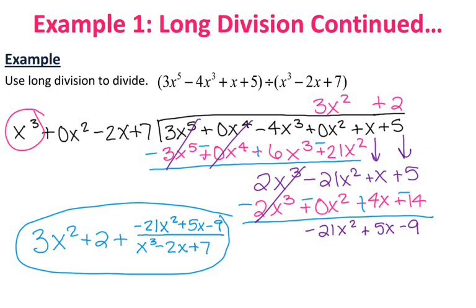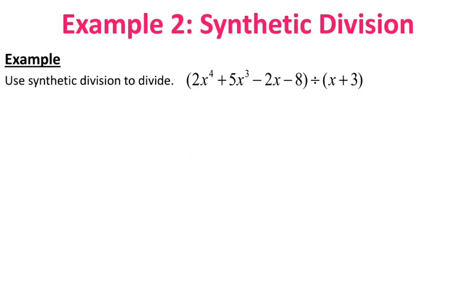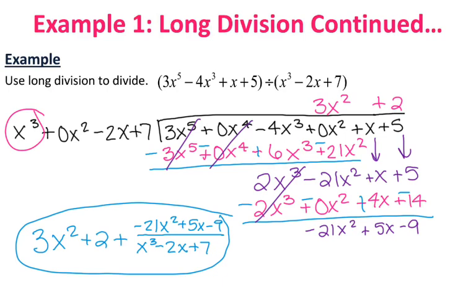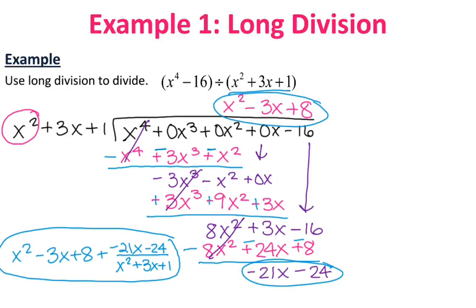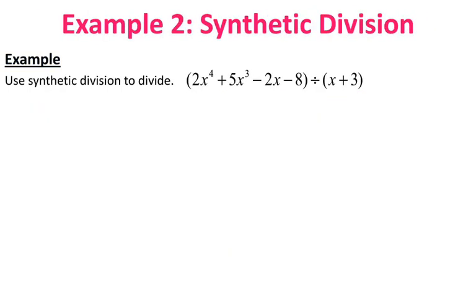That was the end of long division. Now we're moving on to synthetic division, which is way easier than long division. However, it does have some limitations — you can only use it when dividing by x plus a number or x minus a number. It would not have worked for either of the previous problems. Long division works for everything; synthetic division only works when dividing by a linear binomial of the form x plus or minus a number.